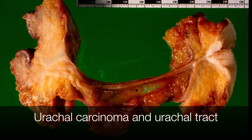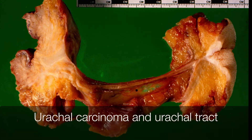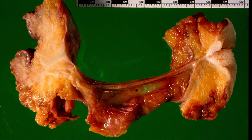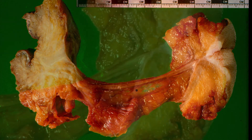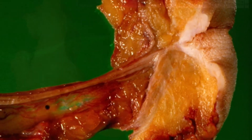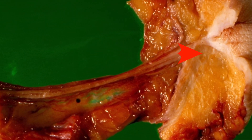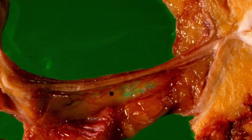This picture shows a urachal carcinoma arising in the dome of the bladder. The entire urachal tract has been resected, extending from the umbilicus to the bladder.